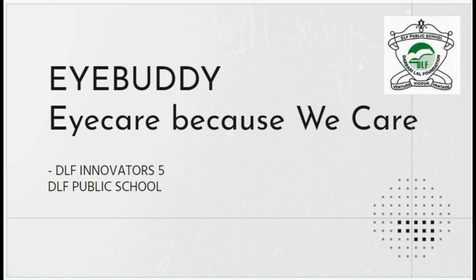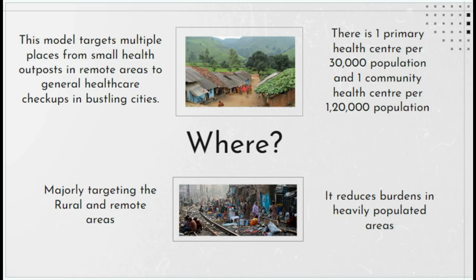Looking at the problem statement, in many rural areas, access to regular healthcare, especially specialized services like ophthalmology, is limited. With only one ophthalmologist for every 12,500 people and retinal checkups being slow and expensive, detecting diseases like diabetic retinopathy becomes a challenge.